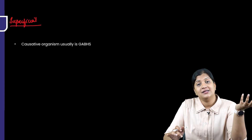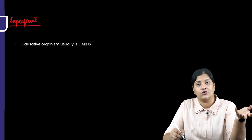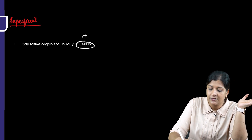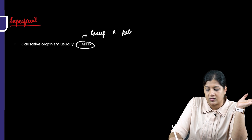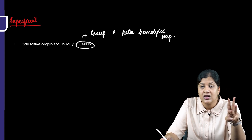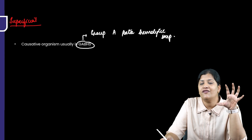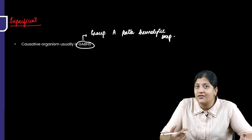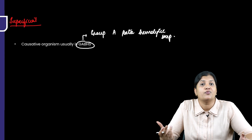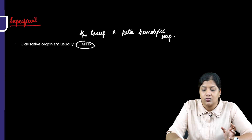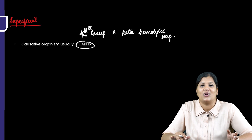The organism responsible for acute tonsillitis is usually Group A beta-hemolytic streptococcus. This organism has cross-reactive antigens against the myocardium, glomerulus, and joints. Therefore, a prolonged tonsillar infection can cause glomerulonephritis, arthritis, rheumatic fever, and subacute bacterial endocarditis due to this cross-reactivity.